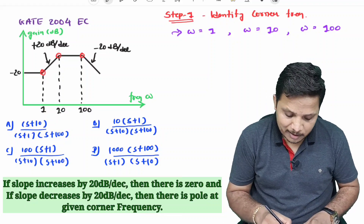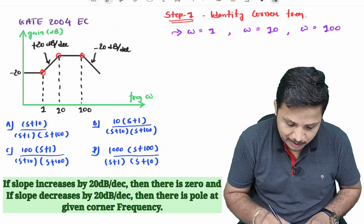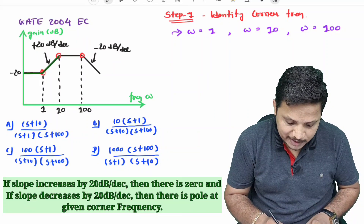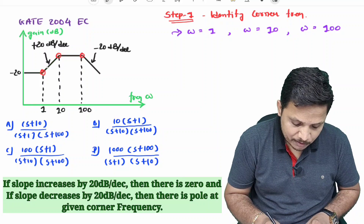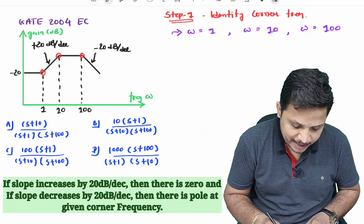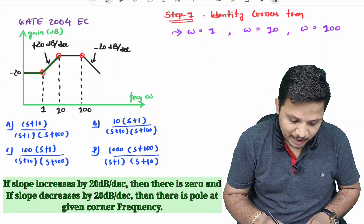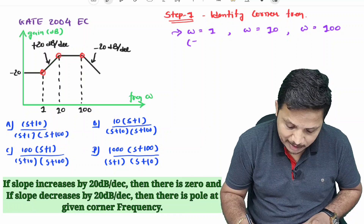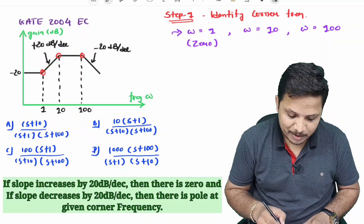Here, the first line has zero slope, and after the corner frequency of 1 radian per second, the slope is increasing. The next line has a slope of plus 20 dB per decade. So we can say at 1 radian per second, there will be a zero, as the slope is increasing. Therefore, there is a zero at ω = 1 radian per second.